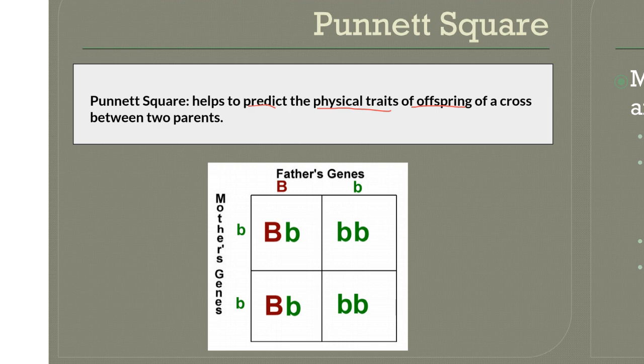What we're going to do is put one parent's genes on the top. Remember, you get two alleles for every gene — one, two. And then the other parent's genes on the other side. So in this case, the dad has a big B and a small b.